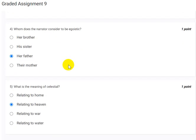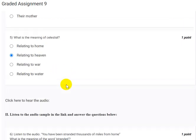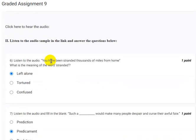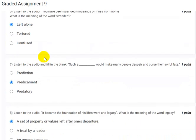The next question is whom does the narrator consider to be egoistic? So the answer is her father. The next question that follows is what is the meaning of celestial? The meaning is relating to heaven.